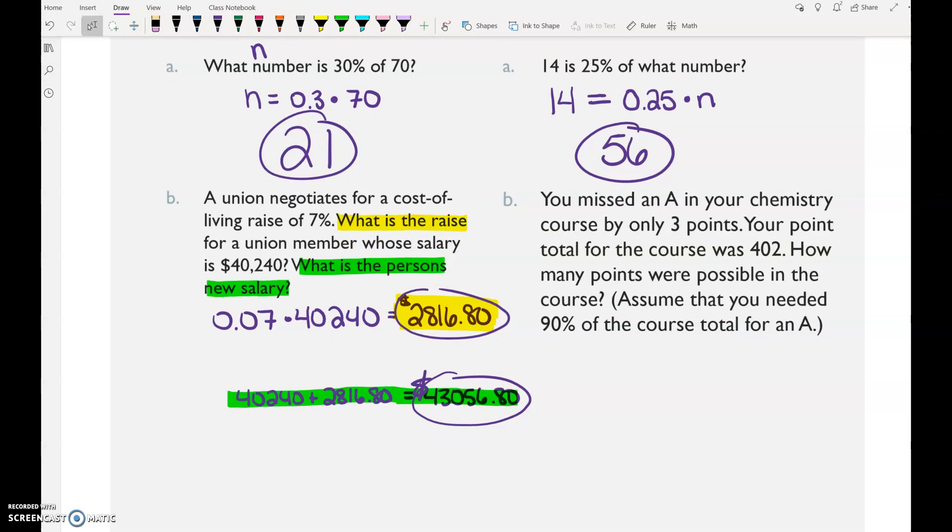B is a very easy problem, Example 2B, after you kind of figure out what they're saying. You missed an A in your chemistry course by only three points. Your point total was 402. How many points were possible in the course? Assume that 90% is an A. So you're three points away from a 90%. That means 405 is a 90%. Do you agree that 405 would be a 90%?